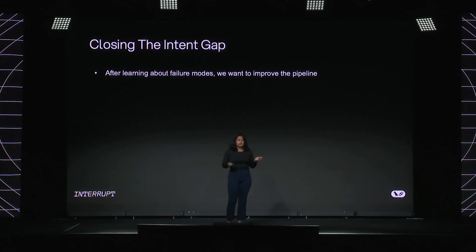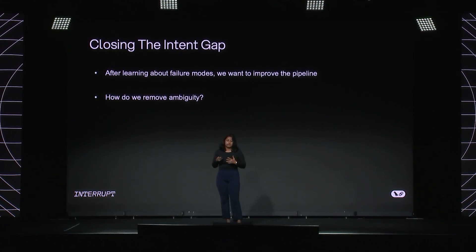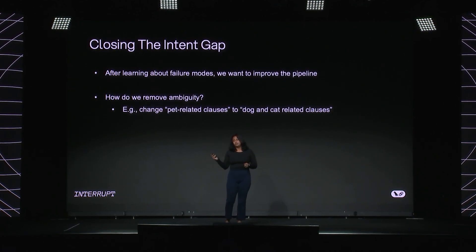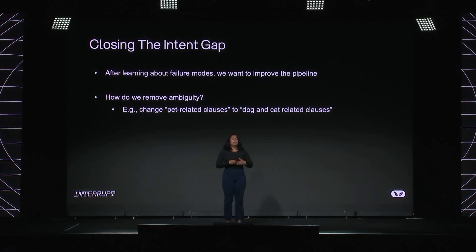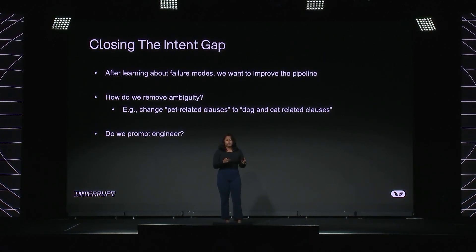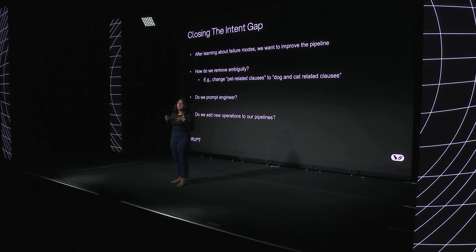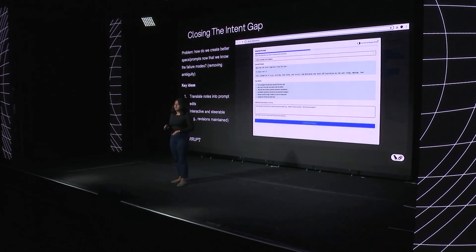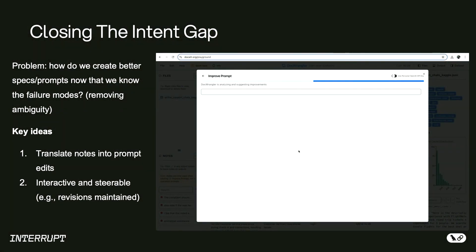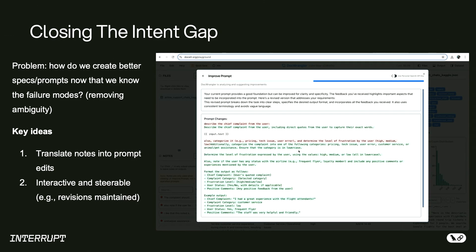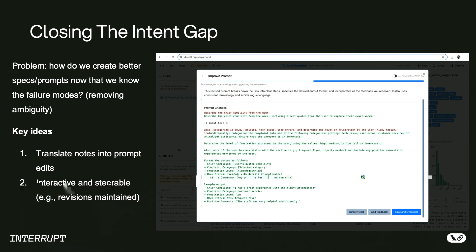Now the intent gap: when we know there are lots of failure modes, how do we go about improving the pipeline? Much of this revolves around reducing query or prompt ambiguity — for example, changing 'pet-related clauses' to 'dog and cat-related clauses.' With hundreds of failure modes, figuring out whether to prompt engineer, add new operations, do task decomposition, or look at subsections of documents is very difficult. One solution we're prototyping, available in our DocETL project, is the ability to take users' provided notes and automatically translate them into prompt improvements, in an interface where people can interactively give feedback, edit, and maintain revision history so it's fully steerable.